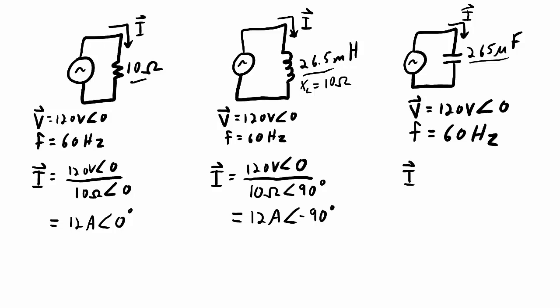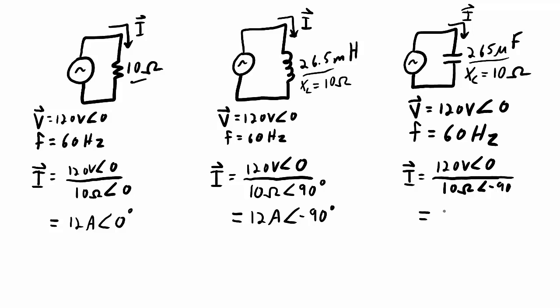For the capacitor example, current equals voltage over impedance — same 120 volts at 0 degrees. The capacitor has a value of 265 microfarads. I calculate the reactance: XC = 1 / (2πfC) = 10 ohms. So the impedance is 10 ohms at a phase angle of minus 90 degrees. Dividing gives 12 amps with a phase angle of 0 minus (negative 90) = positive 90 degrees, indicating the current leads the voltage by 90 degrees.